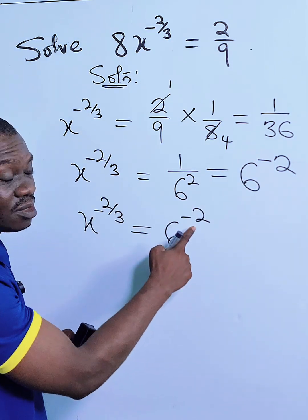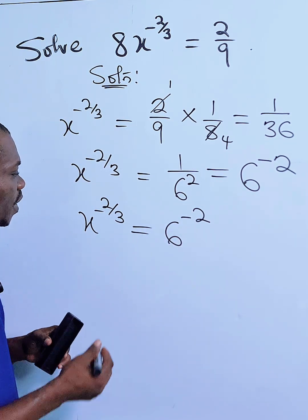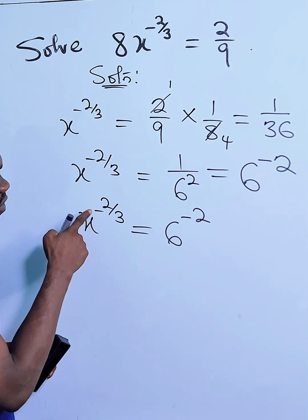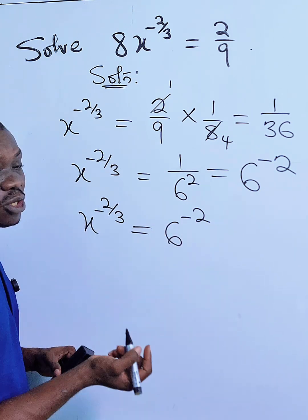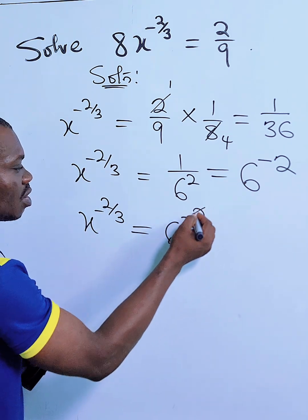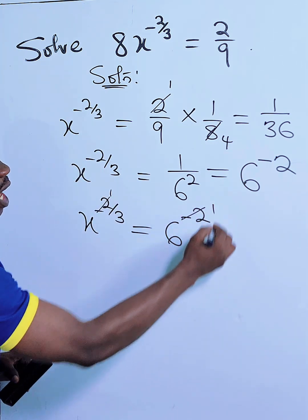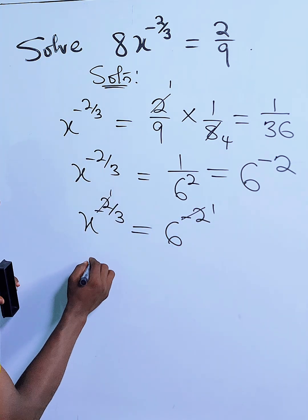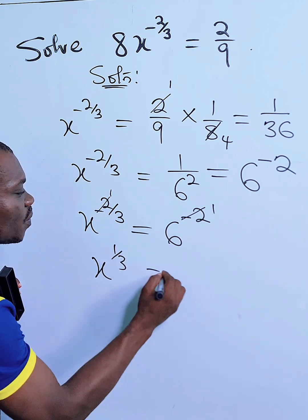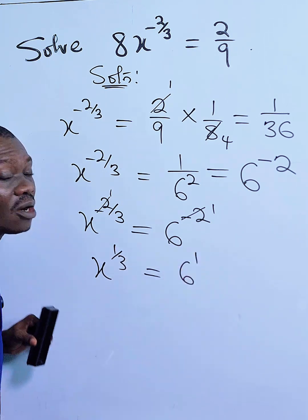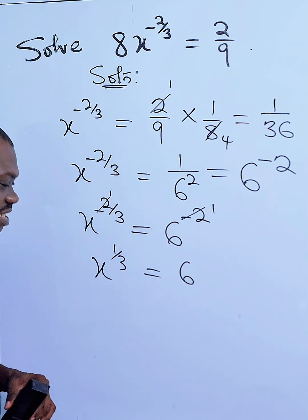Now I will try to see if it is possible to clear these powers. Here I have minus 2 on both sides, so both of them can cancel out. Minus 2 will cancel minus 2, leaving 1 and 1. So what you have now is X to the power of 1 over 3 equal to 6 to the power of 1, which is just 6.